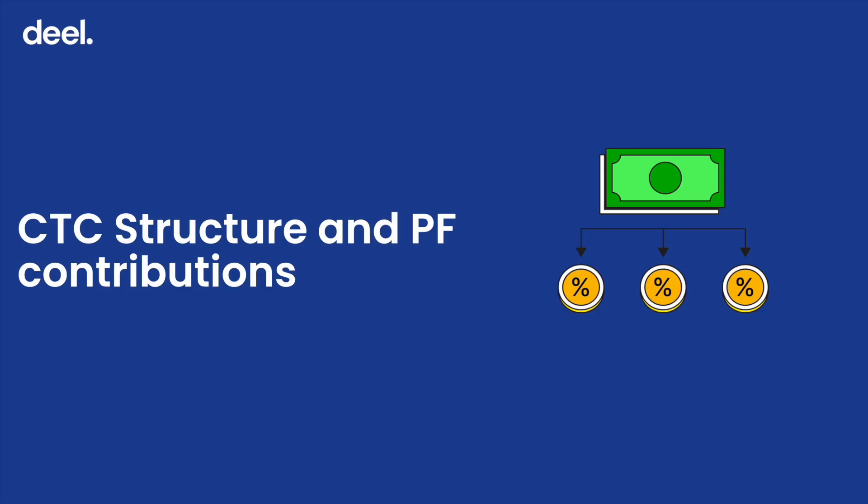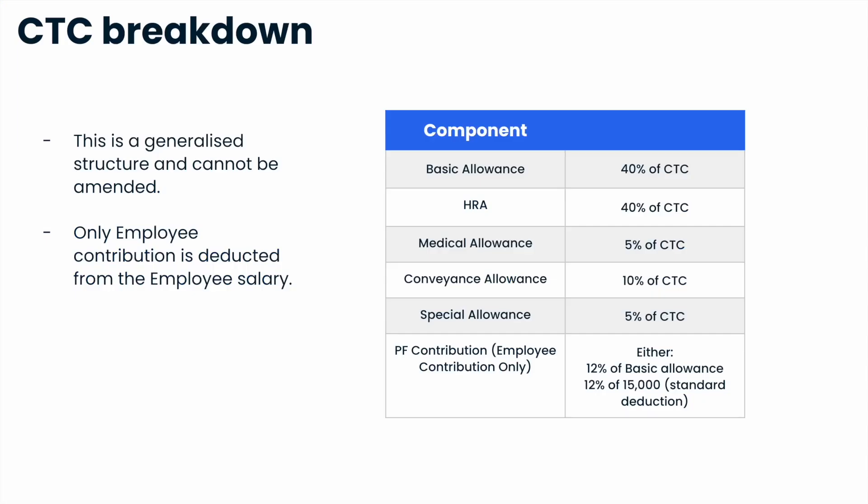We follow a generalized CTC structure that has cost to company, which cannot be amended, and which follows a standard component breakup as you see here in the table.